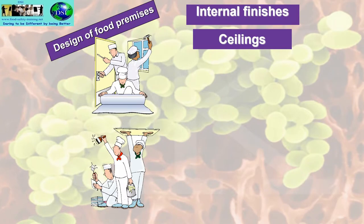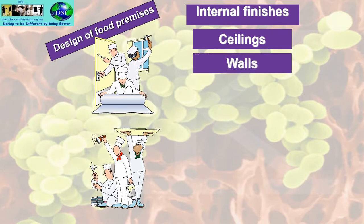Looking at the internal finishes of the various elements: ceilings shouldn't be so high that they can't be cleaned, and should preferably be made of a non-absorbent, easy-to-clean surface. Walls should also be easy to clean, impervious, long-lasting and strong. You don't want any finish where bumping a trolley into it causes pieces to fall out, which could end up as physical contamination.